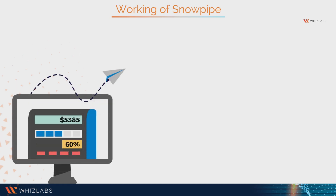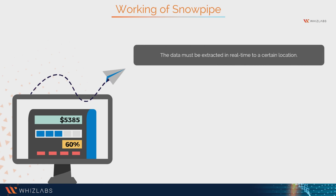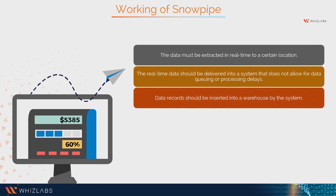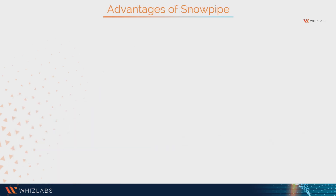One of the most significant advantages of Snowpipe is that it removes bottlenecks and speeds the process of developing near real-time statistics. The three major activities that must be performed to generate real-time data sets are: first, data must be extracted in real time to a certain location; second, the real-time data should be delivered into a system that does not allow for data queuing or processing delays; third, data records should be inserted into a warehouse. Snowpipe automates the last two steps and makes it simple to set up.